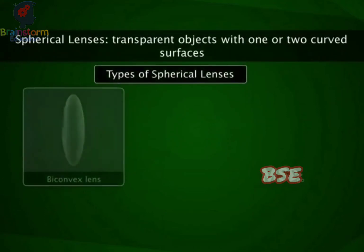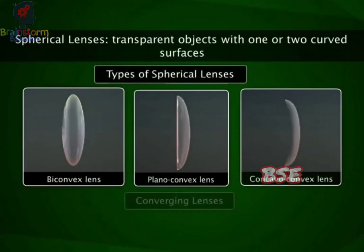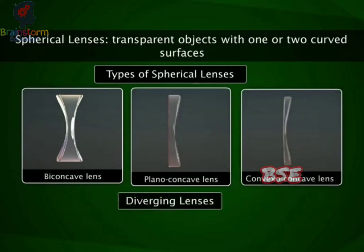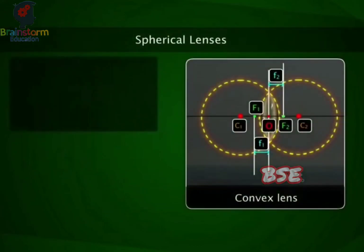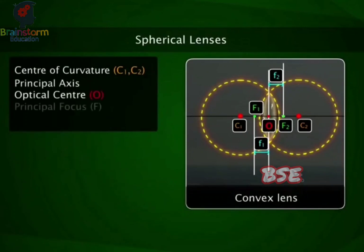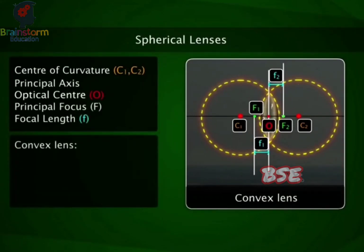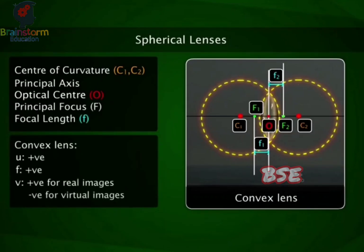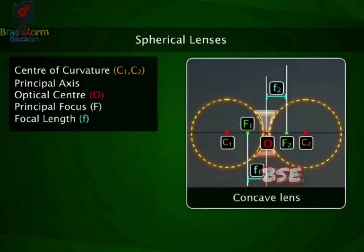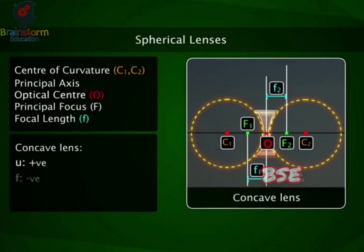Spherical lenses are transparent objects with one or two curved surfaces. They form real or virtual images. Every lens has two principal foci where all light rays directed at that lens converge or diverge. The distance between the optical center and principal focus is called the focal length. The radius of curvature of a lens is twice the focal length. For spherical lenses: U is always positive; F is positive for convex lenses and negative for concave lenses; V is positive for real images and negative for virtual images.